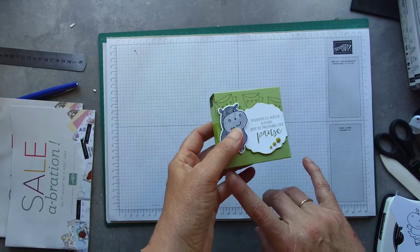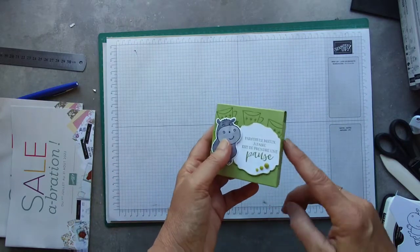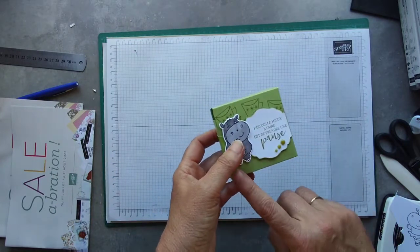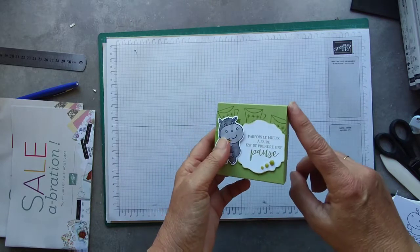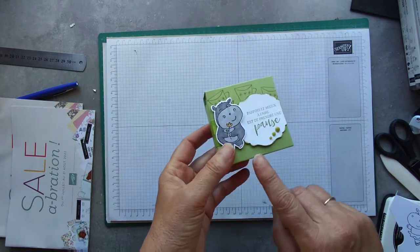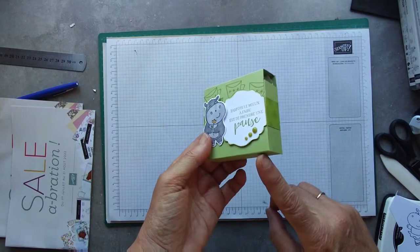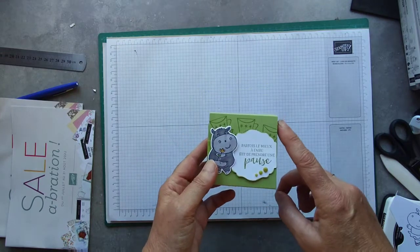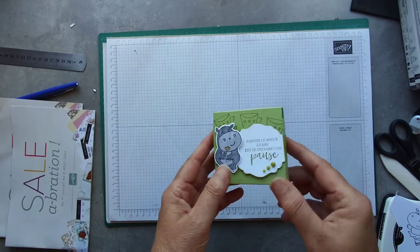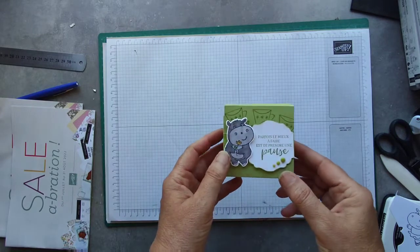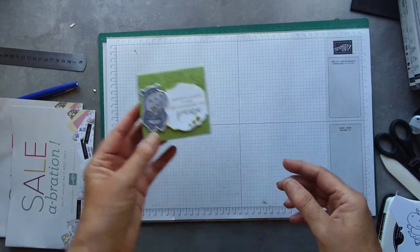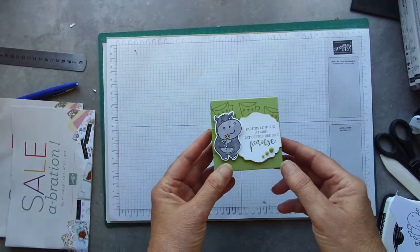The finished size is 3 inches by 1 inch by 3 inches, which is 7.5 by 2.5 by 7.5 centimeters. And if you are ready, let's go!